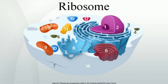The ribosome is responsible for the synthesis of proteins in cells and is found in all organisms. It serves to convert the instructions found in messenger RNA — which itself is made from instructions in DNA — into the chains of amino acids that make up proteins. The ribosome is a highly complex cellular machine, made up of dozens of distinct proteins (the exact number varies a little between species), as well as a few specialized RNA molecules known as ribosomal RNA or rRNA.